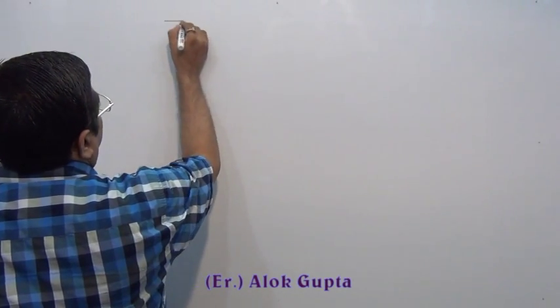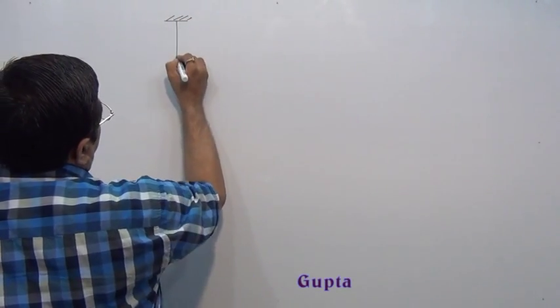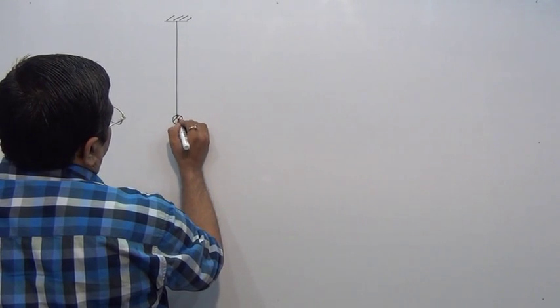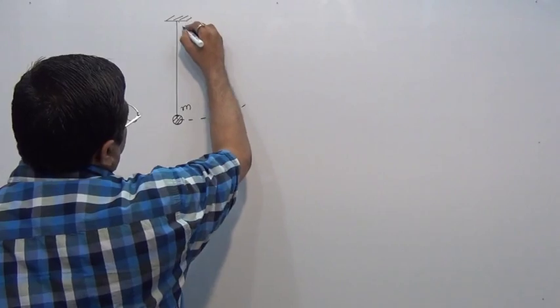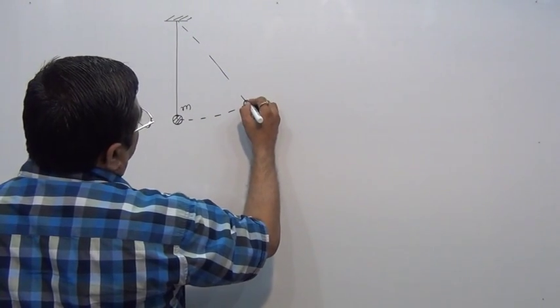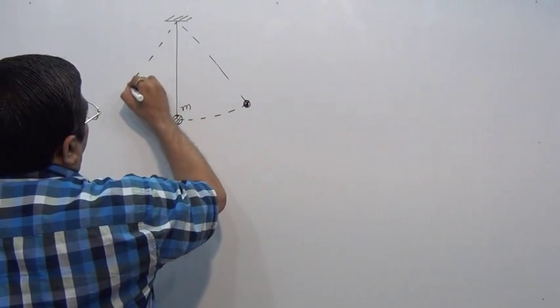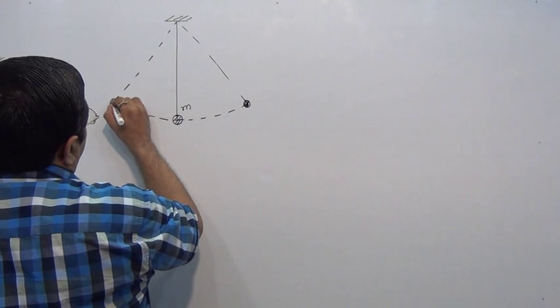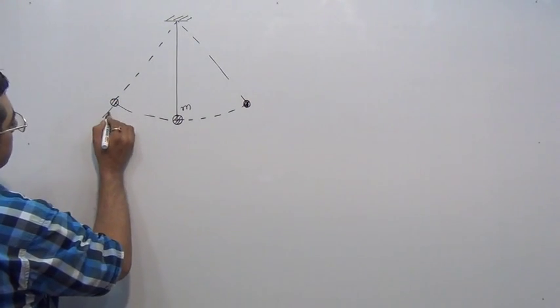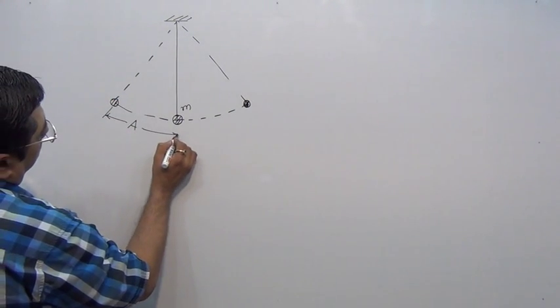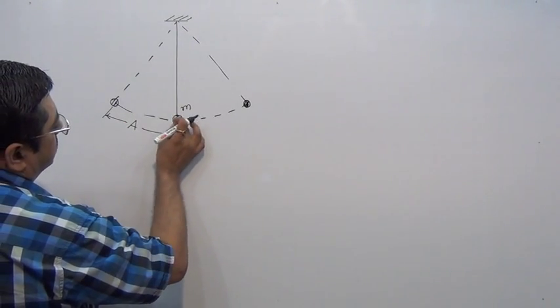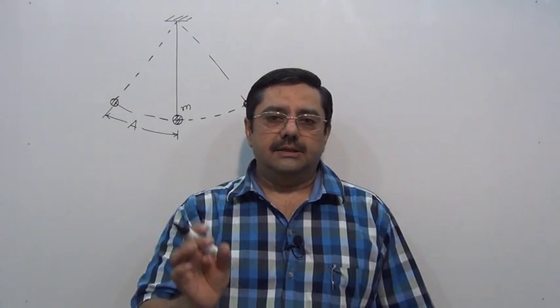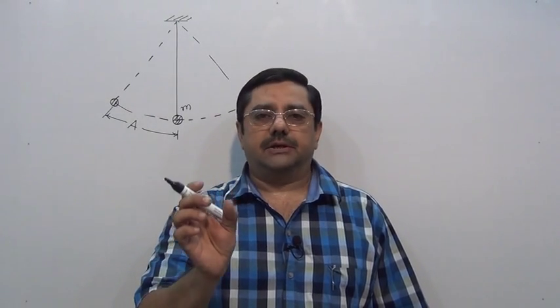Damped oscillator means what? Say, for example, this is a simple pendulum bob of mass m that is oscillating. Due to friction of air, due to viscosity of air, the amplitude of this oscillator decreases gradually, gradually, and ultimately becomes zero. This is called damped oscillation.